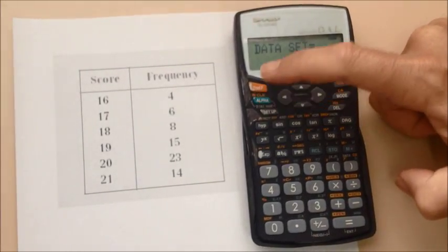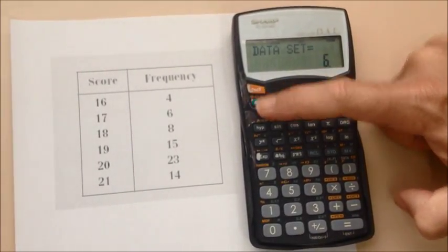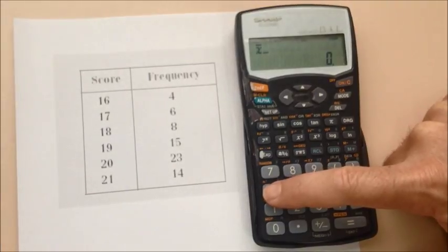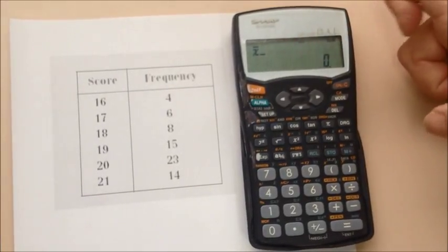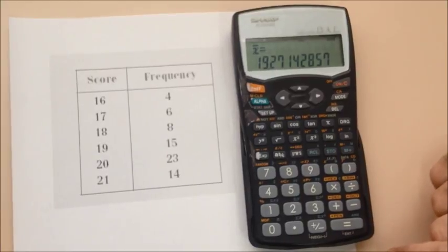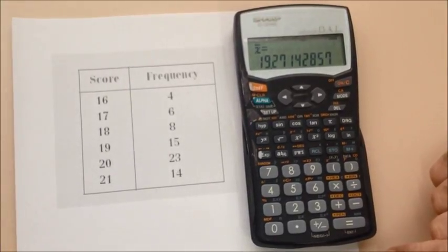So to get the mean, it's a greeny colour. I press alpha, four. You'll see the symbol X bar turning up at the top. And I press equals. And that is the mean for my set of data.